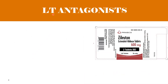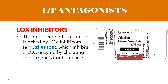Let's now proceed to the leukotriene antagonists. The production of leukotrienes can be blocked by lipoxygenase inhibitors. An example of a lipoxygenase inhibitor is zileuton. Zileuton inhibits the 5-lipoxygenase enzyme by chelating the enzyme's non-heme iron. The label of zileuton extended-release tablet indicates that it is a leukotriene synthesis inhibitor for the prophylaxis and chronic treatment of asthma in adults and children 12 years of age and older. Its clinical use in veterinary medicine is limited due to cost and adverse effects such as liver toxicity.